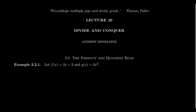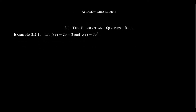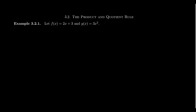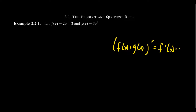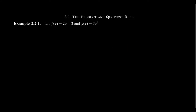Let's first talk about why there is a need for a product rule. In the previous lecture, we learned about sum and difference rules. If you have a sum of two functions, f(x) plus g(x), and you take their derivative, it turns out to be f'(x) plus g'(x). This follows from limit properties — the derivative of a sum is a sum of derivatives. Why does that not work for products? We'll see that in this example.